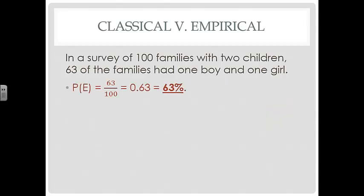All right, so the empirical method, we have 63 out of the 100. So it's the number of occurrences out of the total number, so that's 63%. That's your empirical method. Well now, we're going to take a look at the classical method.